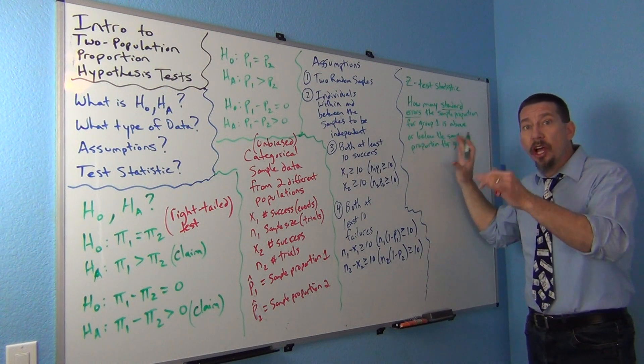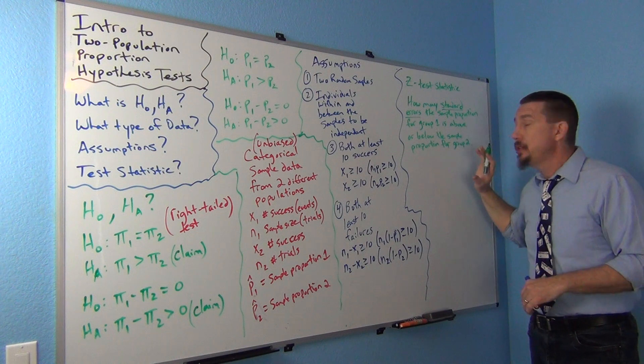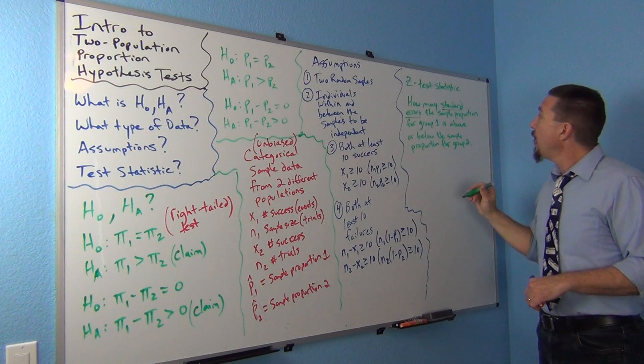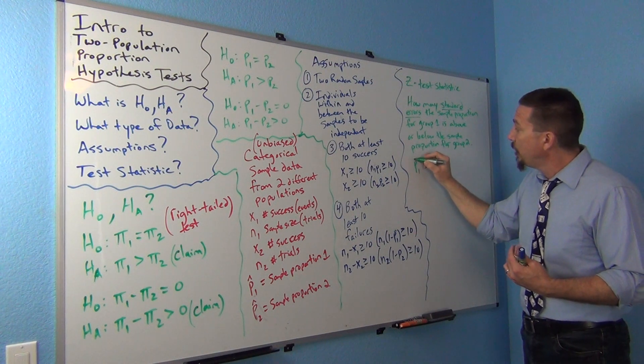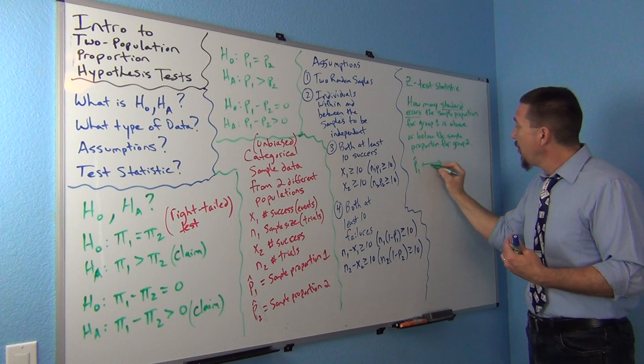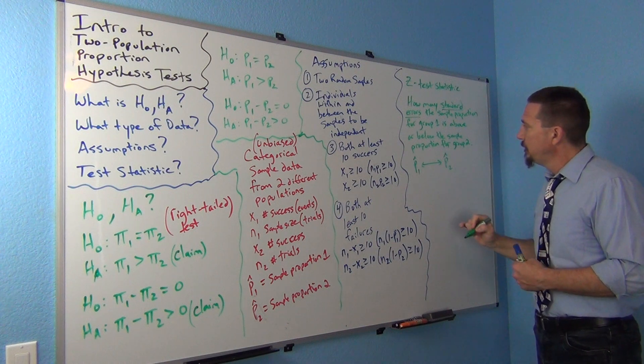Z and T score test statistics is all about number of standard errors. Okay, so, and this time, think of it as how many standard errors apart is my P1 hat from my P2 hat, right?